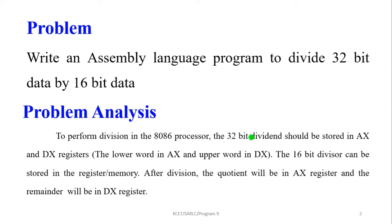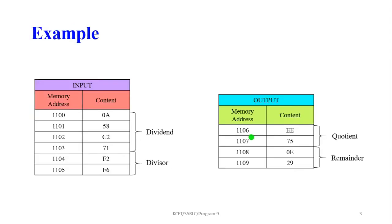First we are going to analyze our problem. To perform the division in the 8086 processor, the 32-bit dividend should be stored in the AX and DX registers — the lower word in AX and the upper word in DX. The 16-bit divisor can be stored in a register or memory location. After the division, the quotient will be in the AX register and the remainder will be in the DX register.